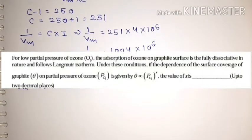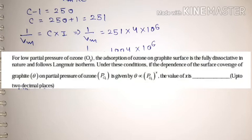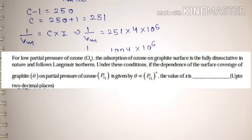The next question is from GATE 2018. For low partial pressure of ozone O₃, the adsorption of ozone on a graphite surface is fully dissociative in nature and follows Langmuir isotherm. Under these conditions, if the surface coverage θ depends on partial pressure of ozone as θ ∝ p(O₃)^x, find the value of x to two decimal places.